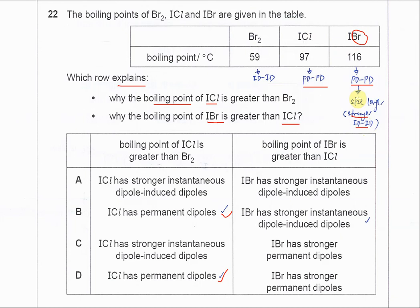It's going to have a stronger ID-ID. This means they both have PD-PD. At the same time, they still will have ID-ID. It's just because the IBr has a stronger ID-ID than the ICl, that's why it has a higher boiling point.